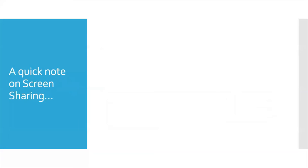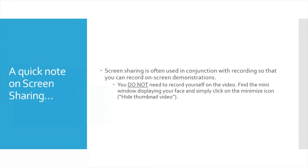Speaking of screen sharing, a lot of people get anxiety, particularly about video. Remember that you do not need to have your video enabled in order to participate in a Zoom meeting. With screen sharing, if you're doing some sort of demonstration, your video — your face — is part of that mini window. However, you can turn that off. Screen sharing is often used in conjunction with recording Zoom so that you can record on-screen demonstrations. But you do not need to record yourself on video. Find the mini window displaying your face and simply click on the minimize icon — when you point at it, it will say 'hide thumbnail video.'